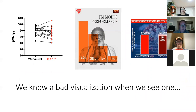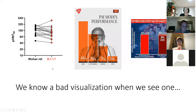I think all of us know a bad visualization when we see one — we can see that things are wrong even if we can't name them. For example, in this first one, the use of color is more or less meaningless. The x-axis is not something that's accessible to me. This visualization is pretty noisy, and the variables are sorted based on percentage instead of something that makes intuitive sense, which would be the scale. This can be misleading.